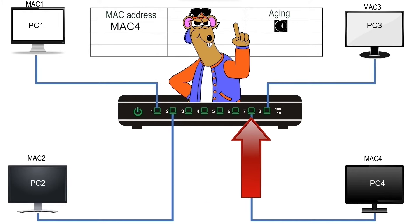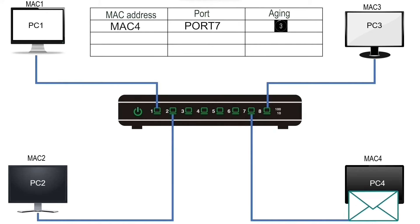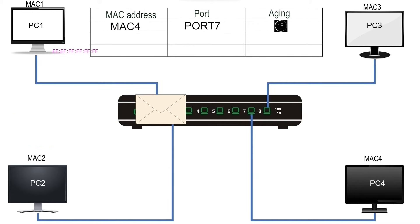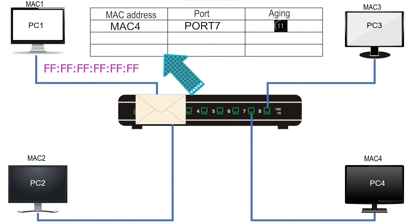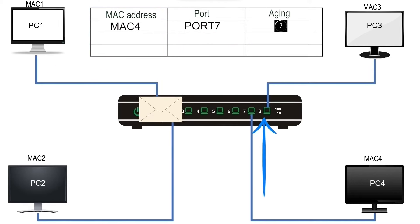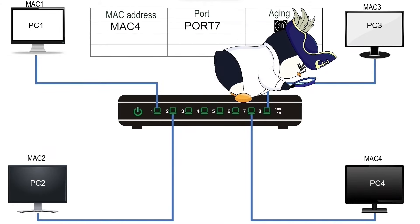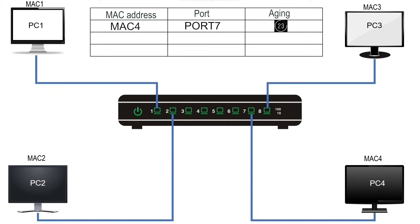Since the default VLAN ID of all ports is 1 and it hasn't been changed, the VLAN IDs of the source and destination ports match, so the switch forwards the frame from port 7 and it reaches PC4. Now suppose PC1 generates a broadcast frame. The frame reaches port 1. Since a broadcast is a destination-only address never in the CAM table, the switch decides to forward it from all ports. Since all ports have the default VLAN ID, it forwards the frame from all ports except the source port.